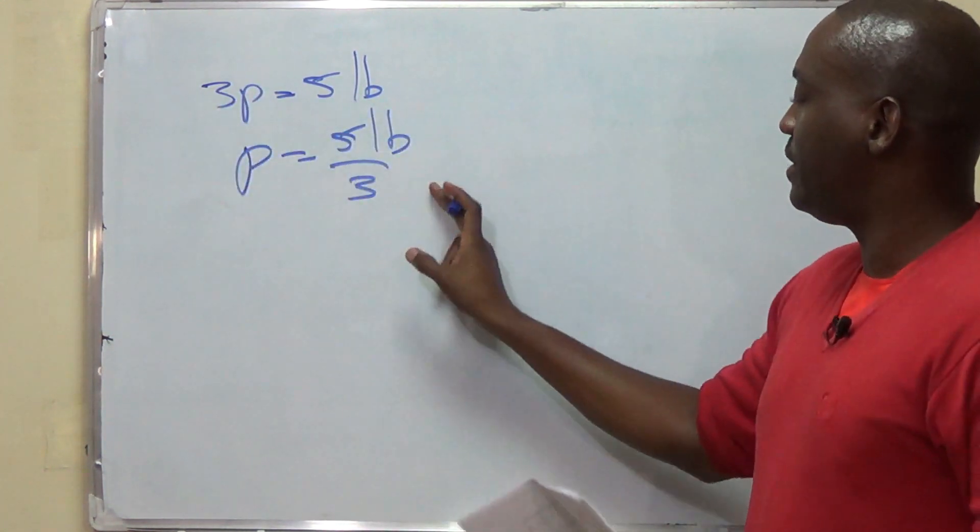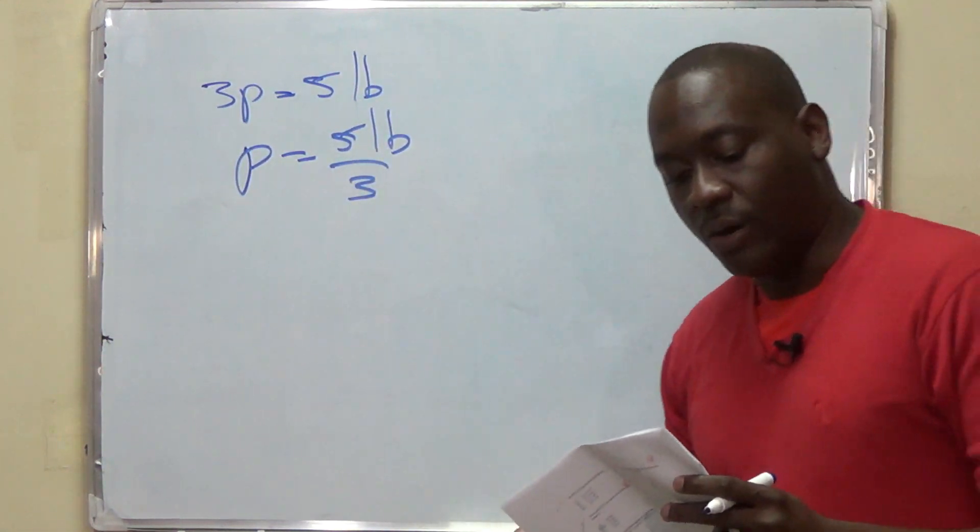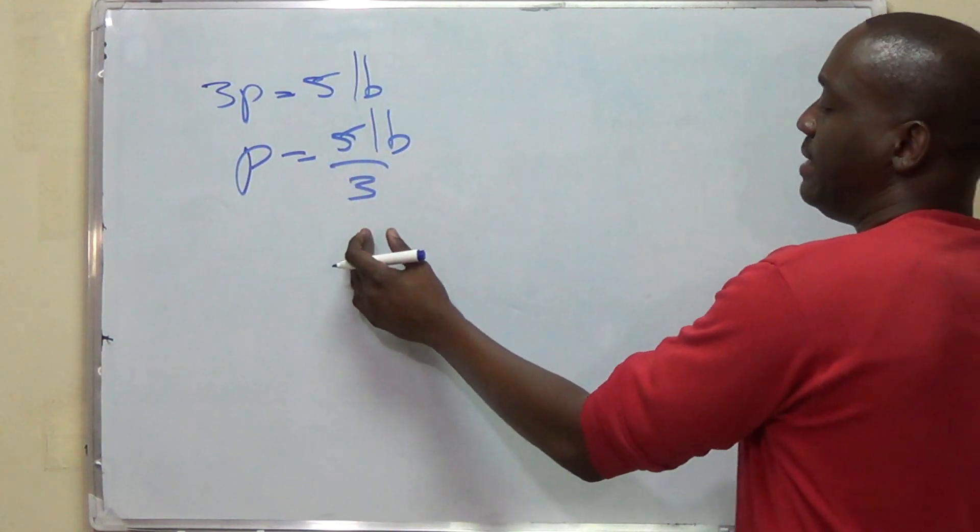So, we divide by 3. We get that 1 pineapple weighs 5 over 3 pounds. So, that now, we can find the cost of 1 pineapple by multiplying 5 over 3 by D.